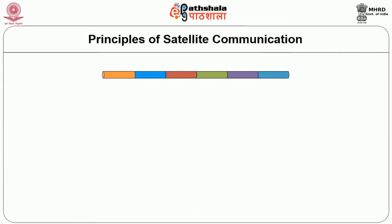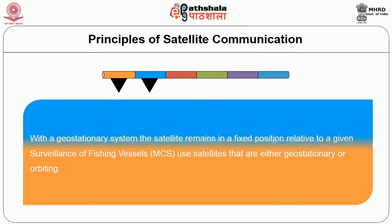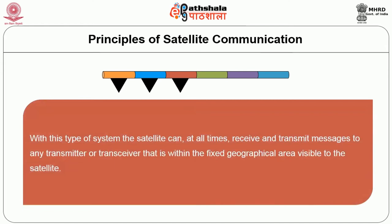With this short introduction, let's get into the principles of satellite communication. Satellite communication systems relevant to fisheries monitoring, control and surveillance of fishing vessels use satellites that are either geostationary or orbiting. With a geostationary system, the satellite remains in a fixed position relative to a given geographical location. With this type of system, the satellites can at all times receive and transmit messages to any transmitter or transreceiver that is within the fixed geographical area visible to the satellite.